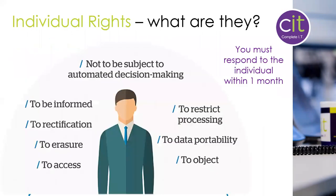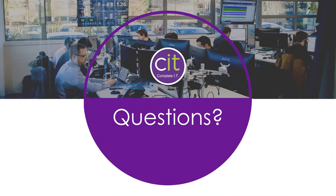Finally, a brief touch on individual rights — this is its own subject in itself. The two most people are aware of are the right to erasure (right to be forgotten) and the right of access, known as a Subject Access Request. If you receive a Subject Access Request, there are processes to follow and you must respond to that individual within one month. If there is demand, a future session could cover individual rights in detail.